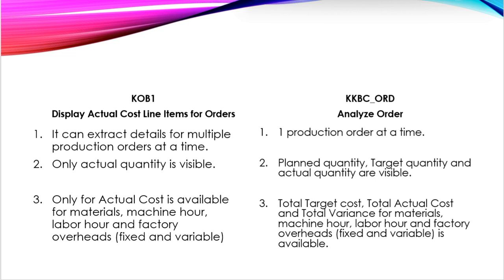The first difference is: in KOB1, you can extract details for multiple production orders at a time, while in KKBC-ORD, you can only view detail for a single production order at a time.